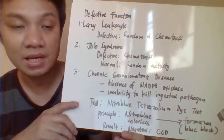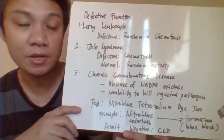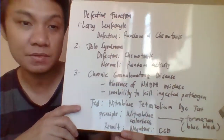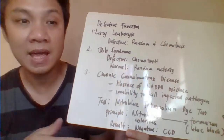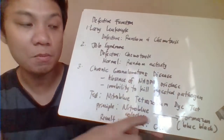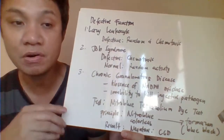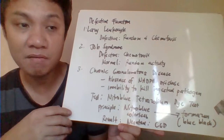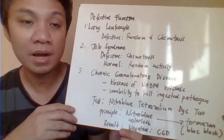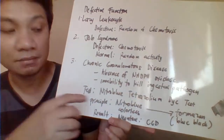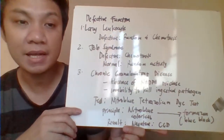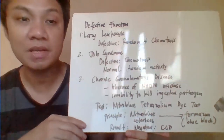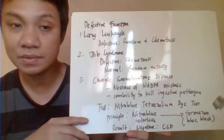The test for chronic granulomatous disease is the Nitroblue Tetrazolium test. Nitroblue Tetrazolium is a dye which is colorless. If you have your specimen and the WBC is capable of killing, it should be converted to blue-black formazan. In the absence of NADPH oxidase, the Nitroblue Tetrazolium dye will remain colorless — it did not convert to blue-black formazan — indicating defective phagocytosis activity.